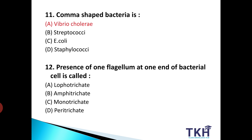Next, question number 12: presence of one flagellum at one end of the bacterial cell is called — flagella की arrangement में, अगर किसी एक end पे एक ही flagella present है तो हम उसे क्या कहेंगे? Option A: Lophotrichate. Option B: Amphitrichate. Option C: Monotrichate. Option D: Peritrichate. तो हमारा answer है Option C: Monotrichate. अगर किसी भी bacterial cell में एक end पे एक ही flagella present है, तो हम उसे monotrichate बोलेंगे।